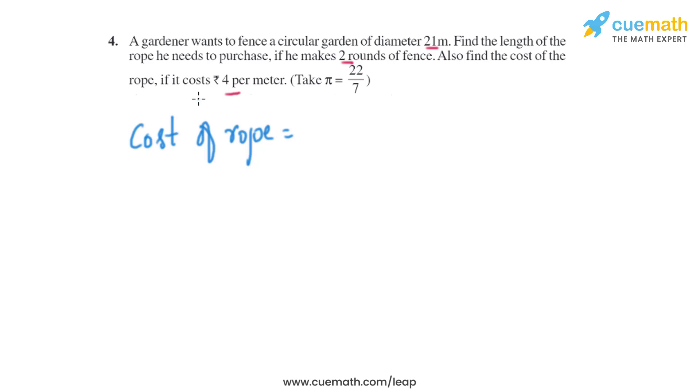Now we need to find the cost of the rope if it costs 4 rupees per meter. We know that the length of the rope is 132 meters, and it costs 4 rupees per meter, so we need to multiply 132 with 4. When we multiply it, we will get 528 rupees. So that is the cost of the rope.